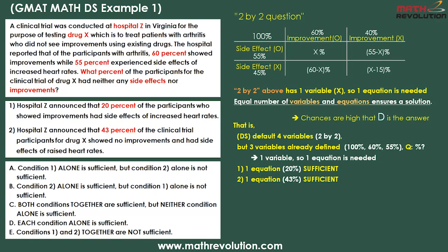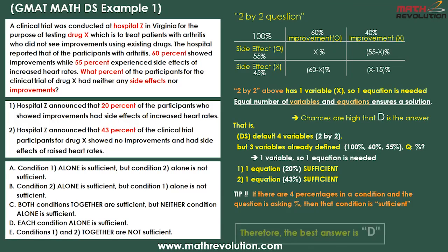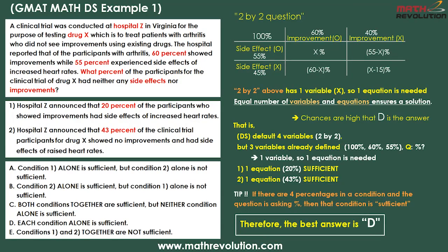As you have seen, if there are a total of four percentages in a condition, counting those given in the question prompt, and the question is asking about percentages, then that condition is sufficient. Therefore, the best answer is D.